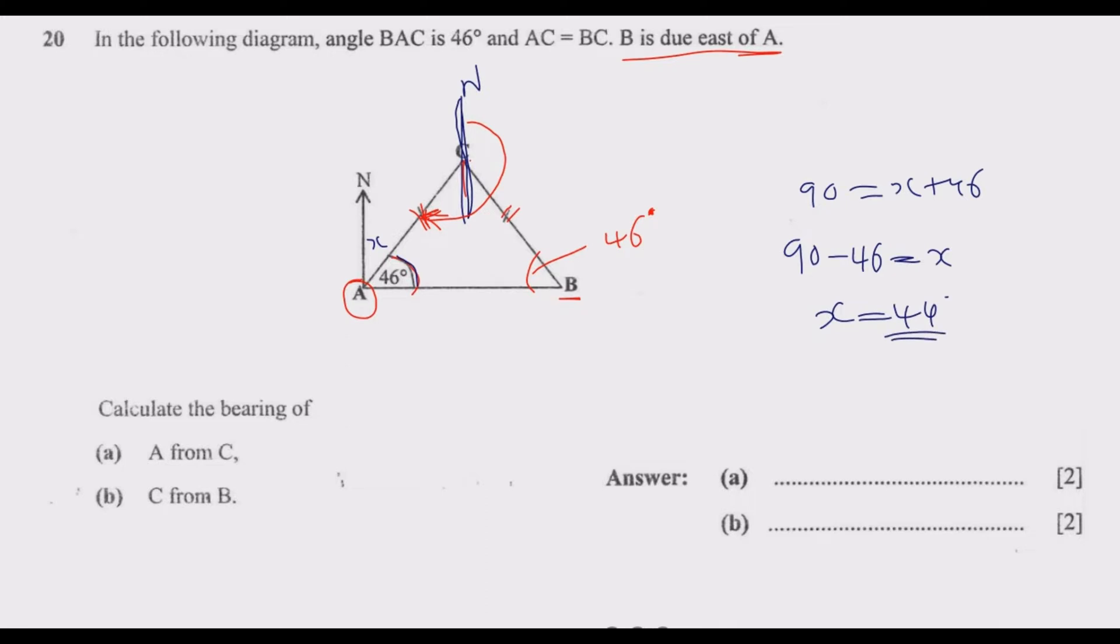Because north lines are parallel, this angle here should also be 44. From here to here is 180 degrees, plus 44, gives us the entire angle. So the bearing of A from C equals 180 + 44 = 224 degrees as our answer.